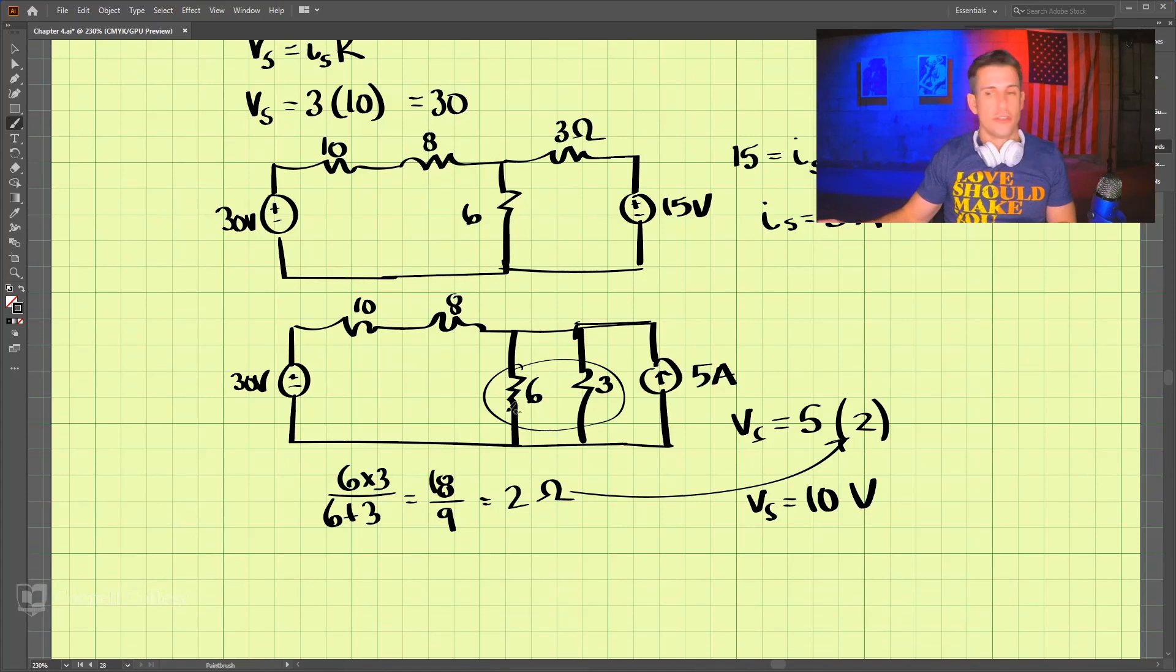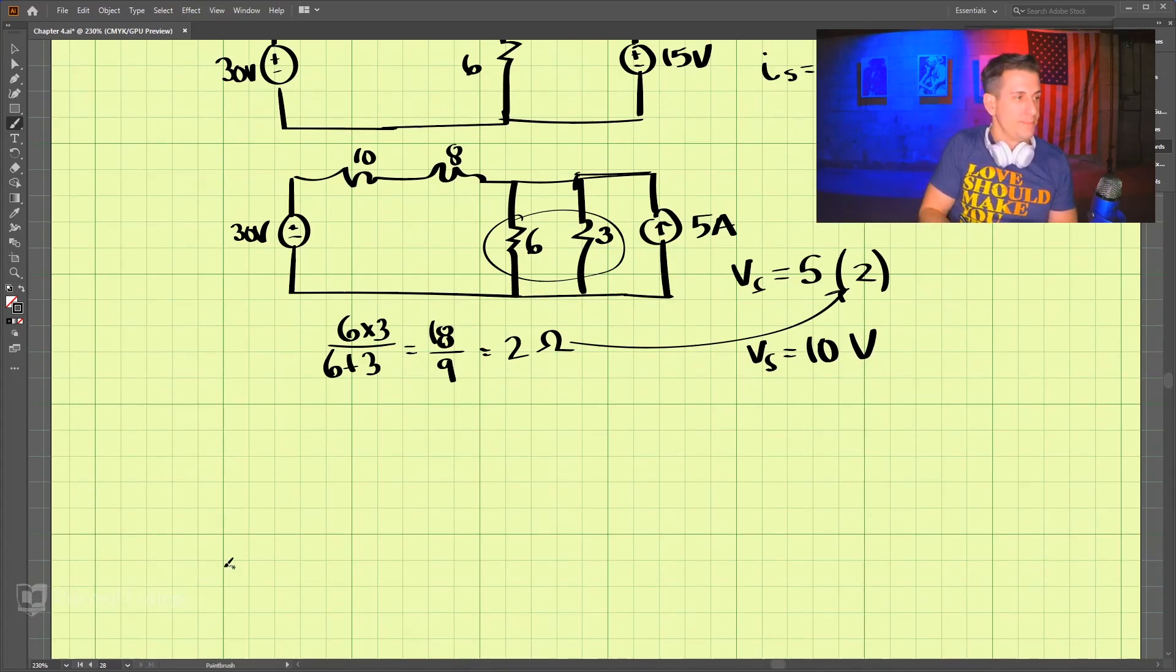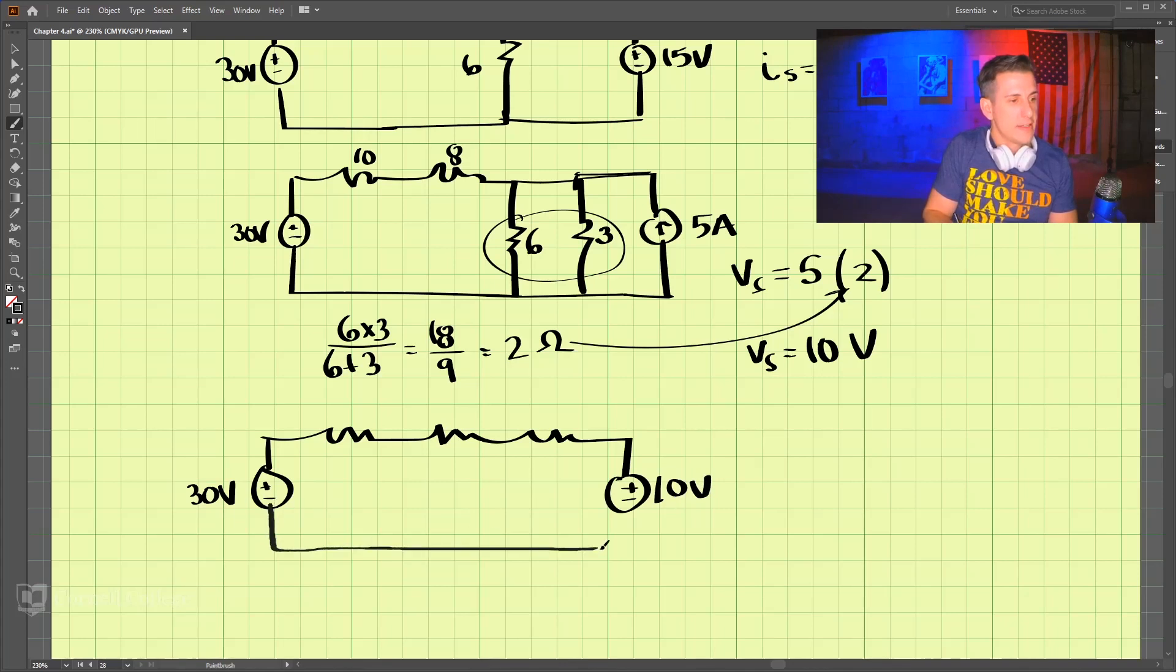Let's redraw the circuit. We have our 30 volts over here. 30 volts. And then 10, 8, and 2. Then we have our voltage source, which is 10 volts. And it's connected here. This is 10, 8, and 2.